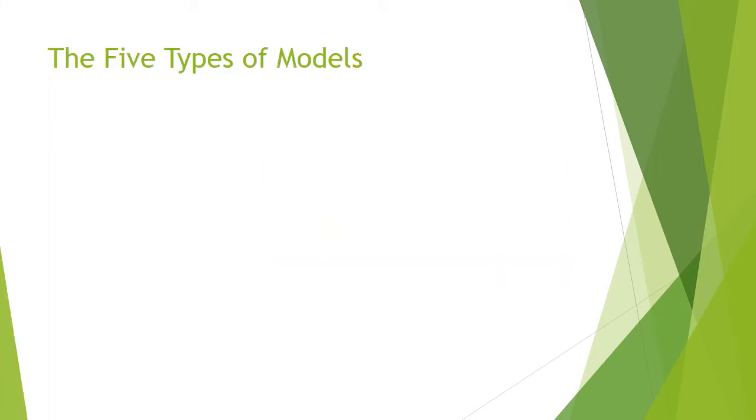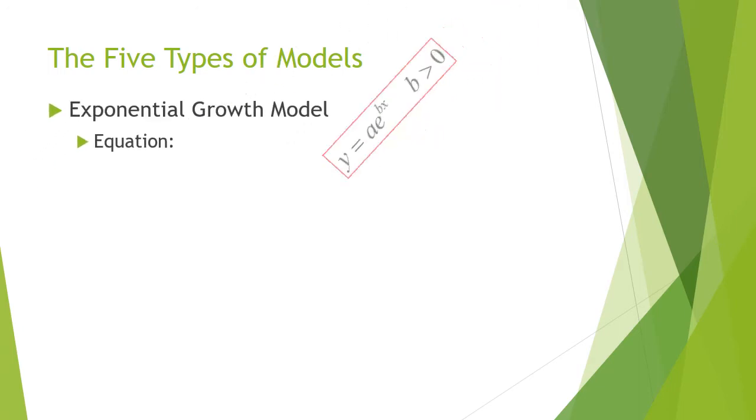There's five types of models that we're going to be looking at. First is the Exponential Growth Model. The equation for exponential growth is y equals a times e to the bx, where b is greater than zero.